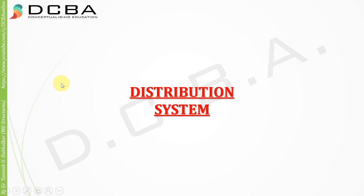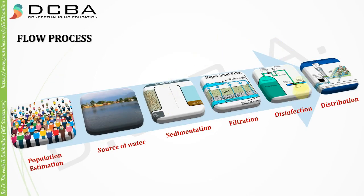Today we will be learning about the distribution system. After the treatment and filtration of water, we finally have to distribute the water to the public. This is the last step in the distribution process. After disinfection, we distribute the water to the public, and after distribution it goes through plumbing.